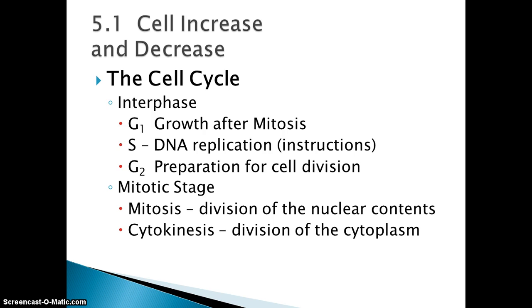Interphase has G1, which is growth after mitosis. The S phase is replication of the DNA — that's where you have that single chromatid that makes two sister chromatids. G2 then has further preparation for cell division. Remember that your hereditary material is in the DNA, which is in the chromosomes inside the nucleus. The mitotic stage is both mitosis and cytokinesis combined.